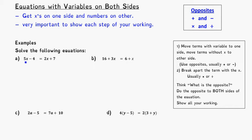Our first equation is 5x minus 4 is equal to 2x plus 7. I might think about putting the numbers on one side and getting the x's on the other side. My first step would be to add 4 to both sides, because plus 4 is the opposite of minus 4 — it'll cancel it. So the next line I'm working would be 5x minus 4 plus 4, which cancel, and I'm left with 5x is equal to 2x plus 11.